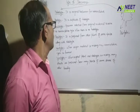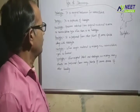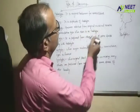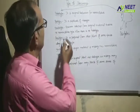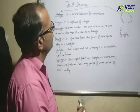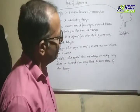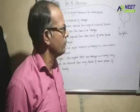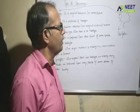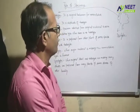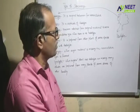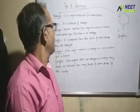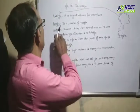Lectotype is the third point. Lectotype means that specimens are selected from the original material to serve as a nomenclature type when there is no Holotype. When the other plant is not the same, the other characters serve as a nomenclature type.